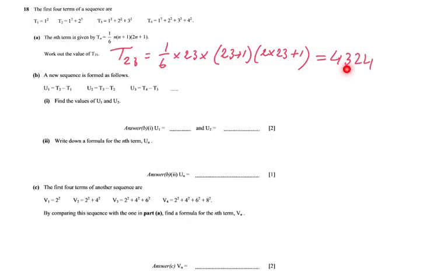That's for two points, by the way — one point for writing down the substituted expression, and your second point for the final correct answer. We continue. A new sequence is formed as follows: the first term is T2 minus T1, the second term is T3 minus T2, the third term is T4 minus T3, and the fourth term is T5 minus T4, and it goes on and on.